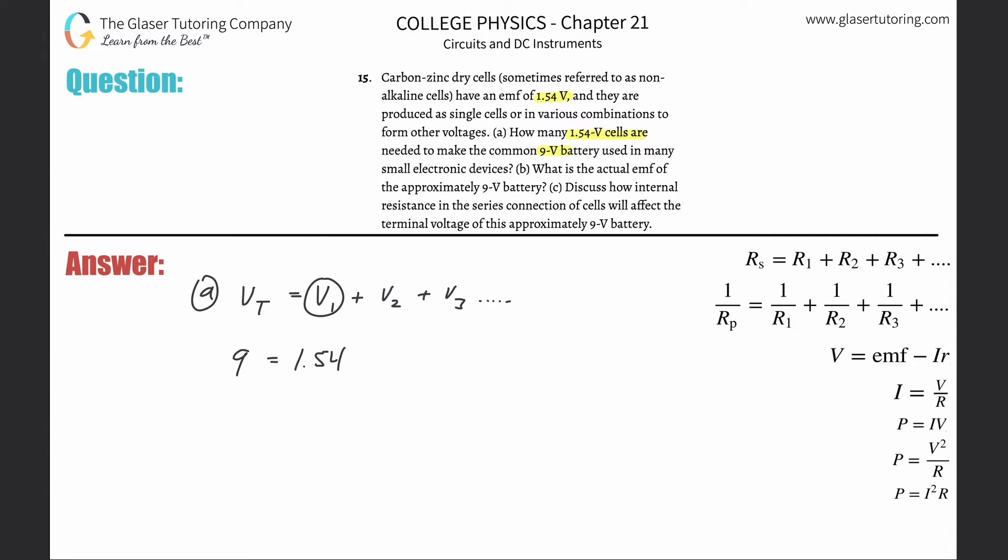It's almost like saying 1.54 times X, plus V2 which would have been times X, V3 times X, because I don't know how many there are going to be. So in other words, I can just plug in my X here and I can divide by the 1.54. When I take 9 and divide it by 1.54, we realize that we get about 5.8.